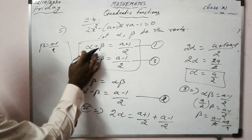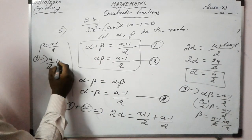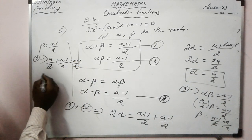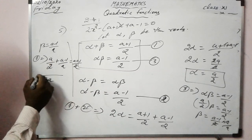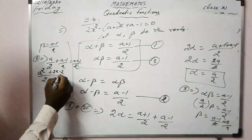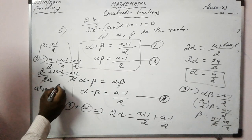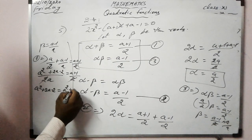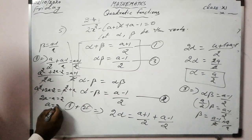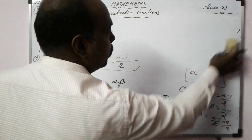Substituting alpha and beta into the sum equation: a/2 + (a-1)·(2/a)·(1/2)... simplifying: a²/2 + (a-1) by common denominator equals (a+1)/2·a. After cancelling a², we get 2a - a = 2, so a = 2. Hence proved.